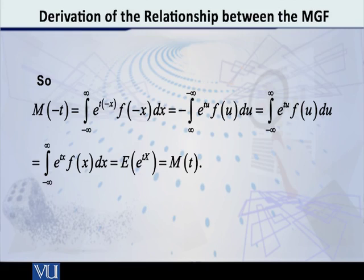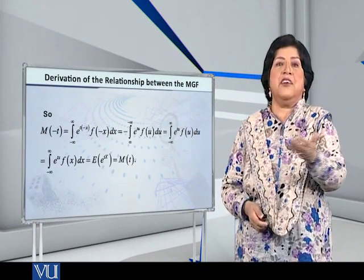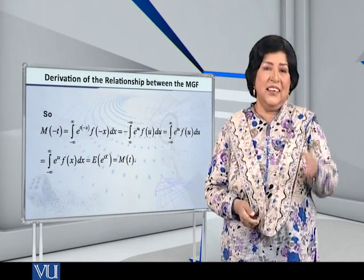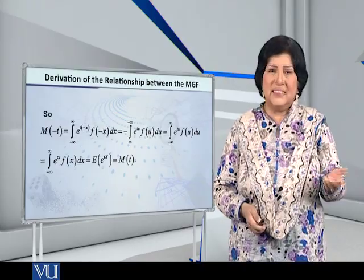So this is how we have proved that for that particular PDF which is symmetric about the origin and for which the MGF exists, that MGF has this very interesting property: that M of minus T is equal to M(t).